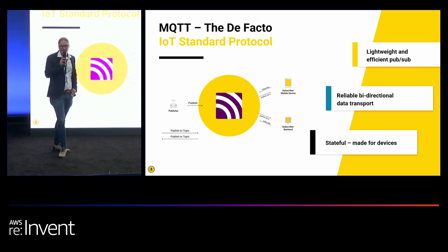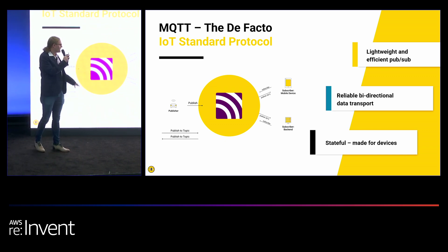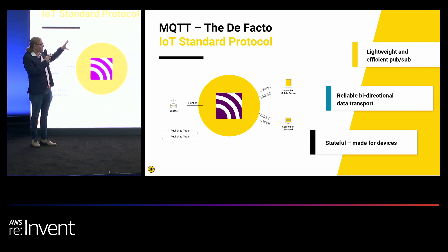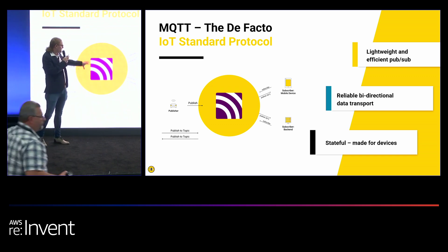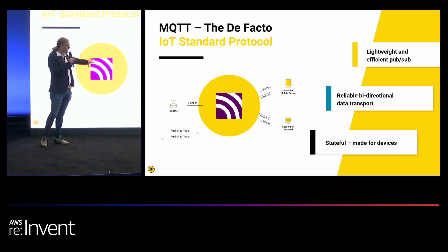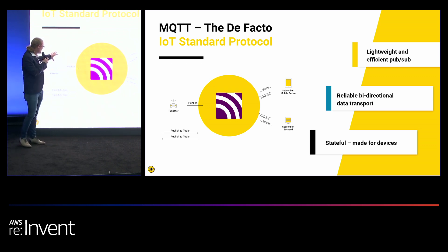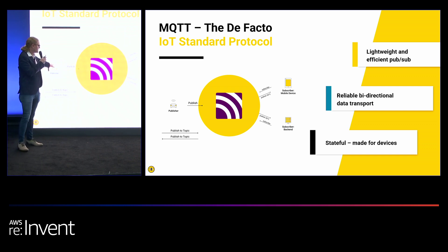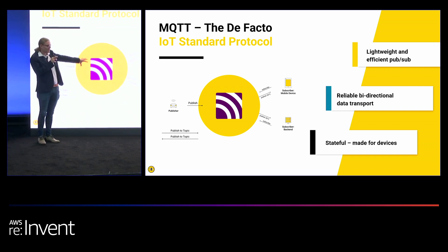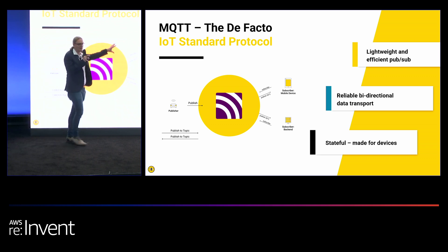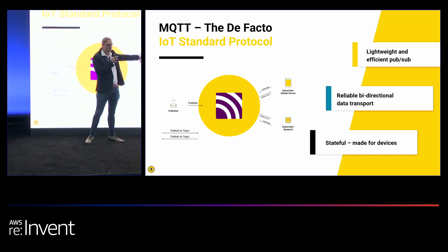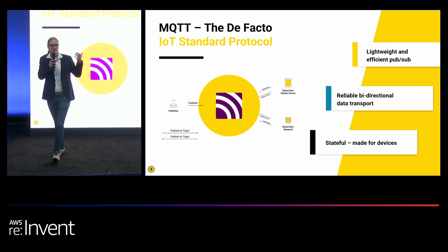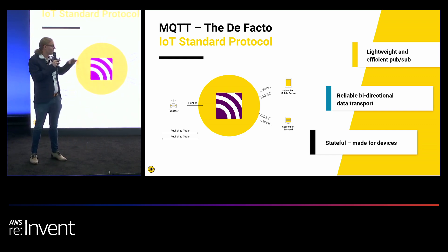MQTT is a communication protocol built with the publish-subscribe pattern. This means there's a brokered architecture, which makes sure that publishers of data — which could be cars, factories, or other things — push data to a centralized system. You can have a virtually unlimited amount of consumers of the data, and you can scale up and scale down however you need.